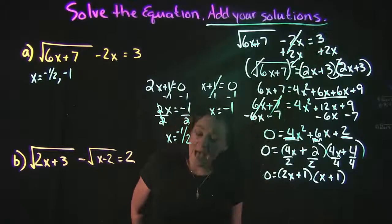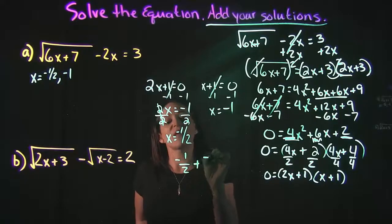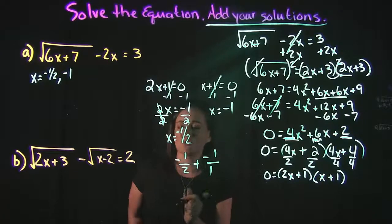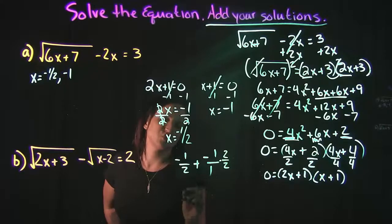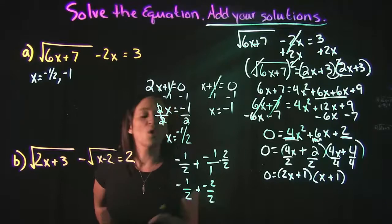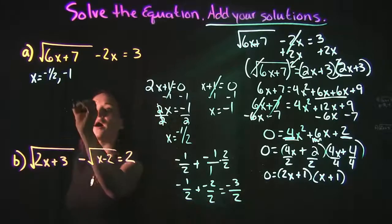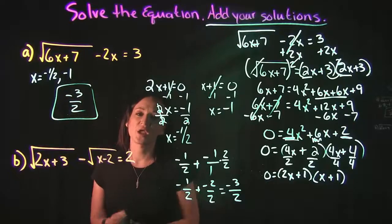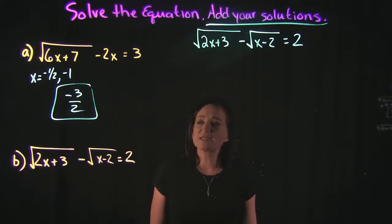The problem wants us to add our solutions together: negative one-half plus negative 1. Getting a common denominator of 2, that's negative one-half plus negative two-halves, which gives a grand total of negative three-halves.